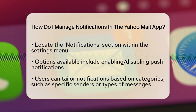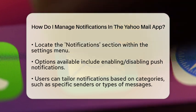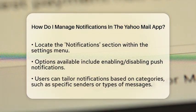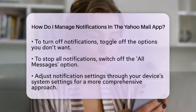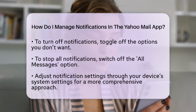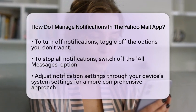If you decide that you want to turn off notifications, it's super easy. Just toggle off the options you don't want. If you want to stop all notifications, simply switch off the all messages option.